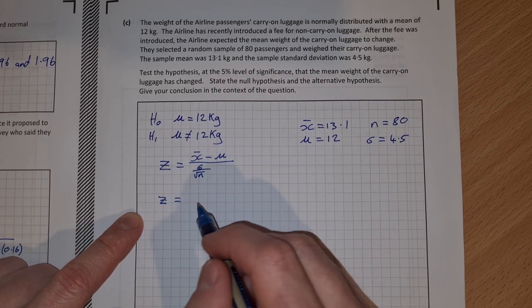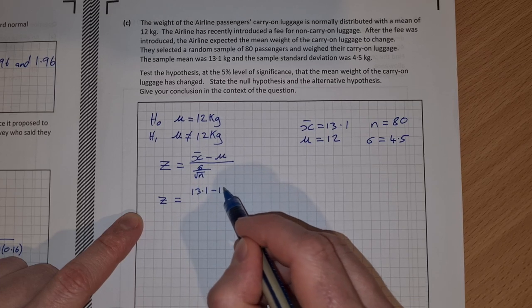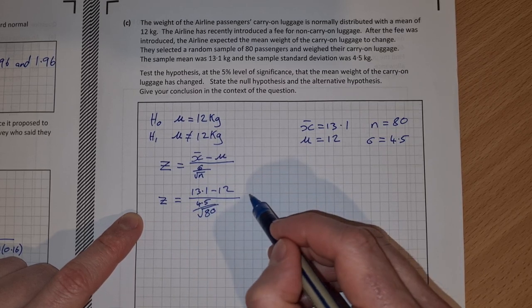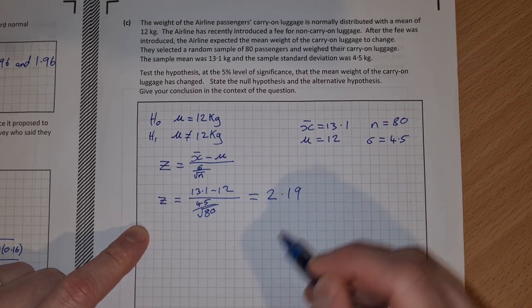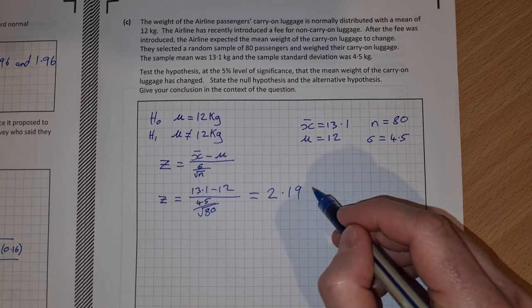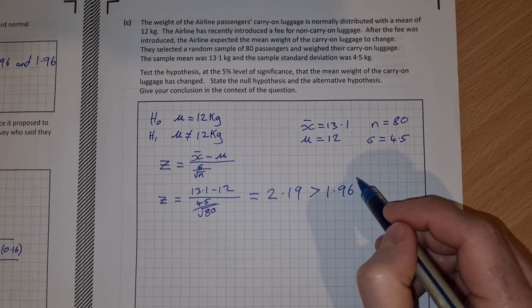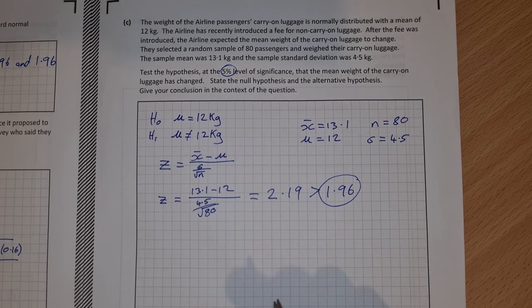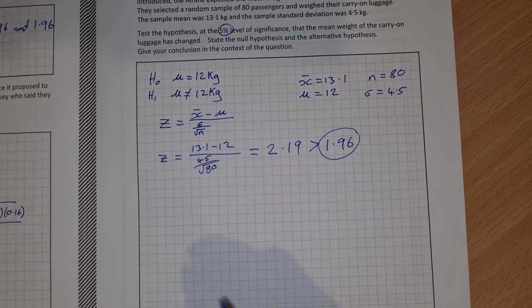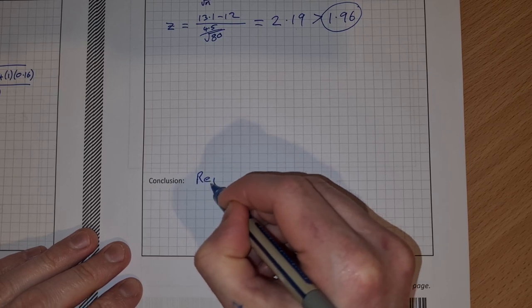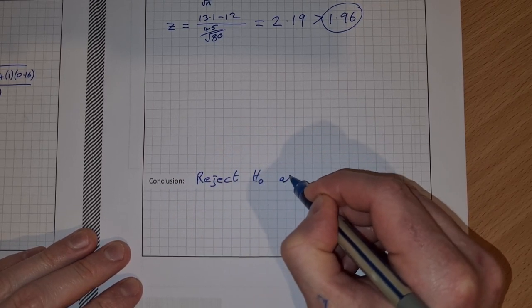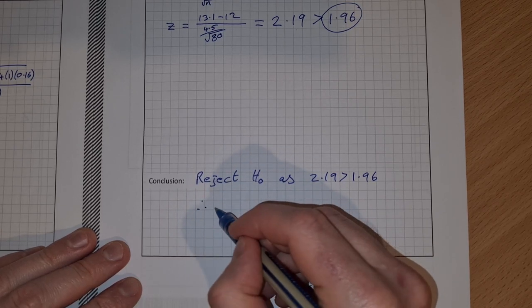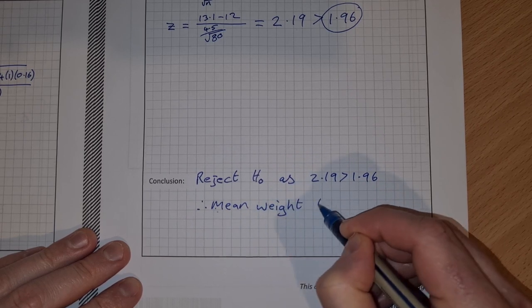That should give you a z-score of 2.19. And we compare that to 1.96. 2.19 is greater than 1.96. 1.96 is the z-score you get at the 5% level of significance. So 2.19 is greater than 1.96, so that means we reject H0 as 2.19 is greater than 1.96. And that means, in the context of the question, the mean weight has changed.